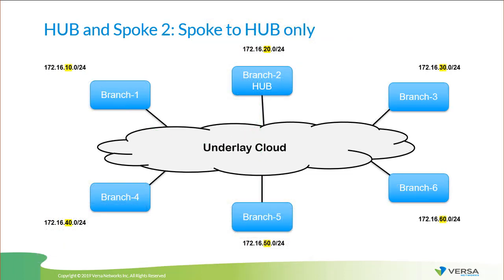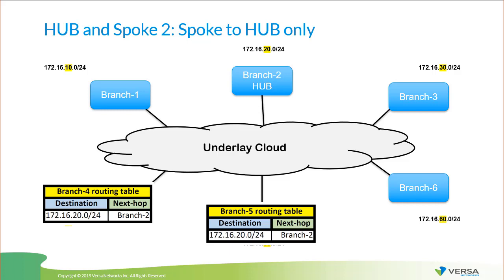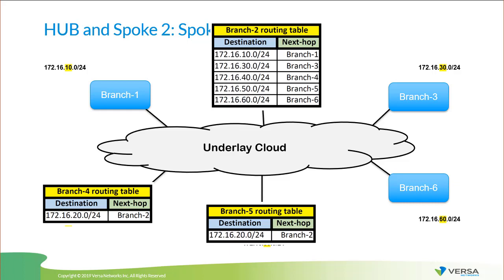Next topology: hub and spoke 2, or spoke-to-hub only. In this case, once again, branch 2 is our hub and all the rest are spokes. If branch 4 would like to communicate with what is behind branch 2, they can directly go to branch 2. But branch 4 will never be able to communicate with the network behind branch 5. From the routing perspective of branch 4, we will receive routes only from branch 2 — our hub — and will not even receive the routes behind branch 5 and other branches. While from the hub perspective, it will know how to reach any of the networks. This topology might be recommended for the guest VRF, or for services that require one-to-many communication but not communication between the branches.